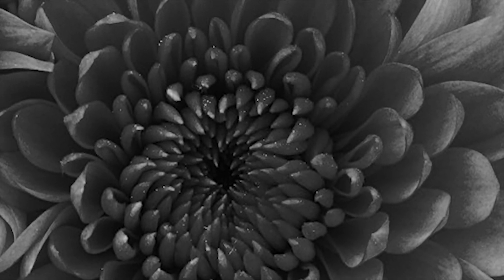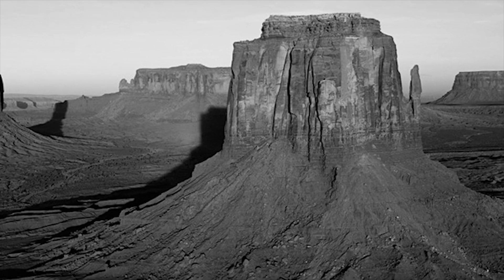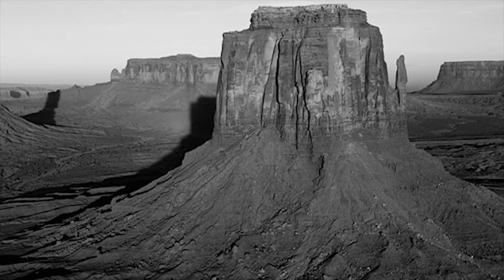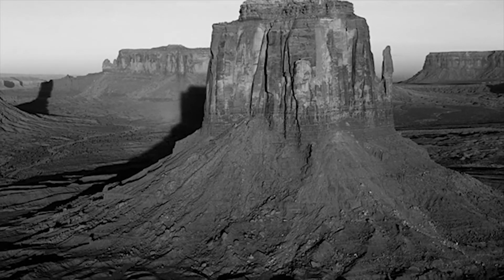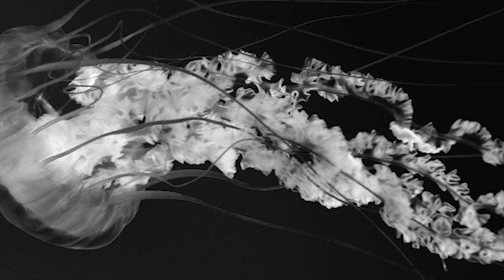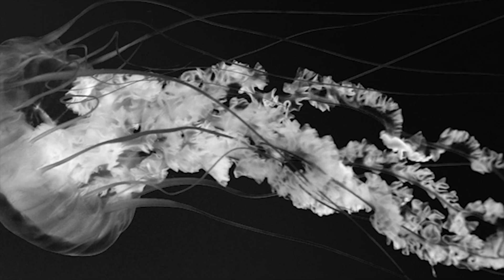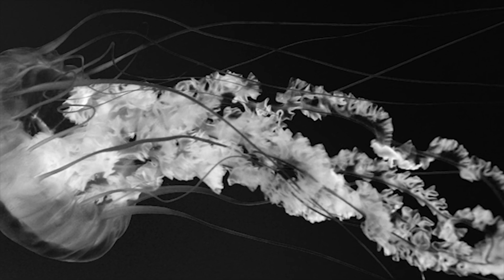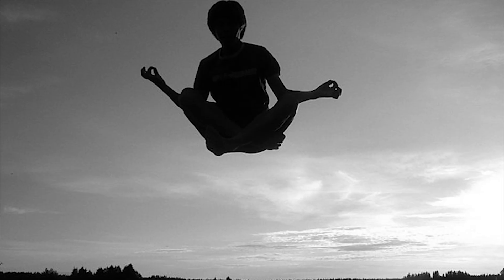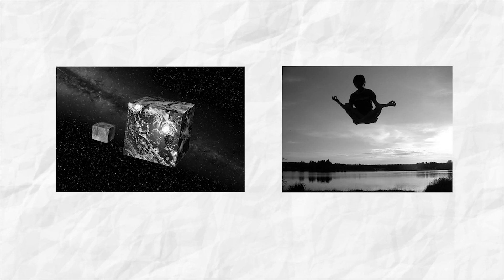Similarly, there are correlations between pixels of images. Pixels in a region tend to have similar values. Physical laws restrict the degrees of freedom of the actual content of the images. Gravity restricts us from observing a cubic planet or a levitating man. So these images are definitely not on the naturally occurring images manifold.